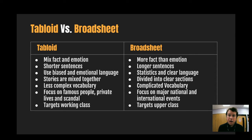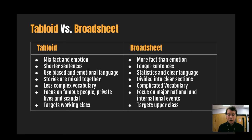A broadsheet, on the other hand, will be much the opposite of those points. They will use more fact than emotion, with evidence and facts and figures to support their stories. Longer sentences with statistics, clearer language, divided into clear sections — perhaps an economy section, a political section, or a section on climate. More complex technical vocabulary, focusing on major national and international world events, targeting a more educated upper-class audience.